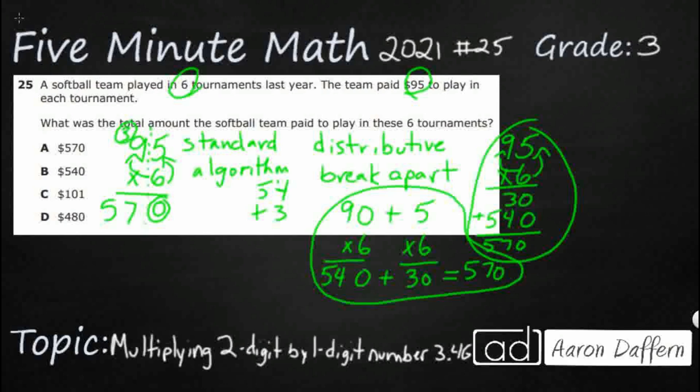Some of you might use compensation. 95 is really close to 100. So that's going to be 600. What I did was I added 5, so I need to take away six groups of 5 to get it back. And guess what that's going to be? 570.